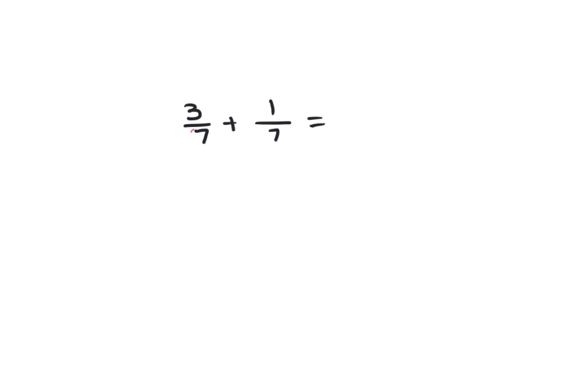If we have the same denominator, we can write directly and add the numerators together. So 3 plus 1 equals 4, giving us 4 over 7. If we have the same denominator, we can add the numerators together to find the answer.